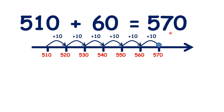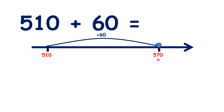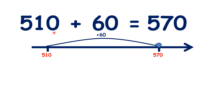But we could have answered this question without using a number line. You might have been able to add 60 all in one go to get your answer of 570. And that's because you know that if we start with 110 and we're adding six tens, we will need seven tens in our answer.